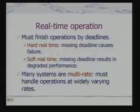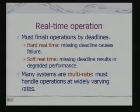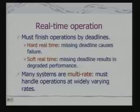For soft real-time systems, we can at times miss deadlines. For example, when playing a video on a laptop, even if we cannot decode a frame in time, nothing catastrophic happens — it only disturbs your viewing experience. Many systems are also multi-rate, meaning they receive inputs from the external world at different rates and need to handle these different rate inputs.